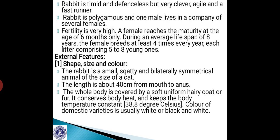Rabbit is very timid and defenseless, but very clever, agile, and a fast runner. Rabbit is polygamous, and one male lives in the company of several females. The fertility is very high. A female reaches maturity at the age of just six months. During an average lifespan of about eight years, the female breeds at least four times every year, each litter comprising about five to eight young ones. Per year it may produce around 10 to 16 young ones.